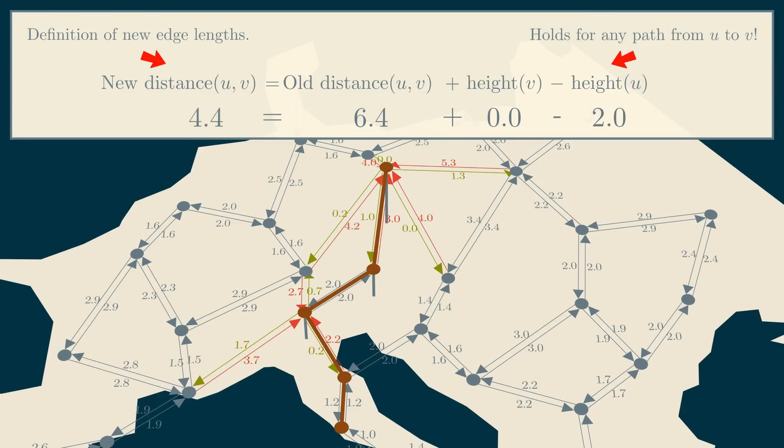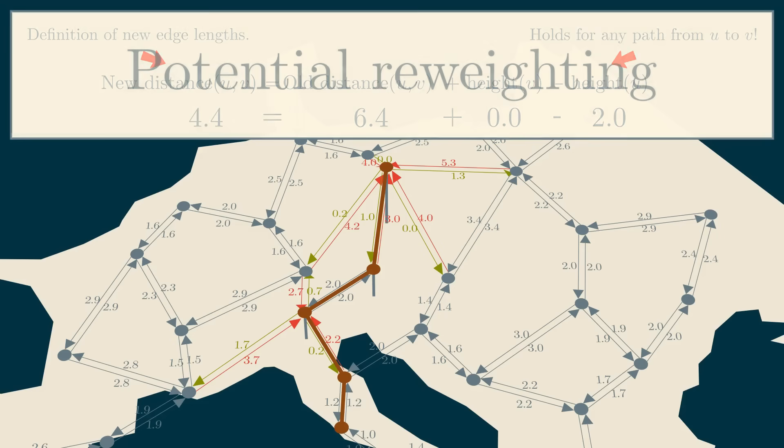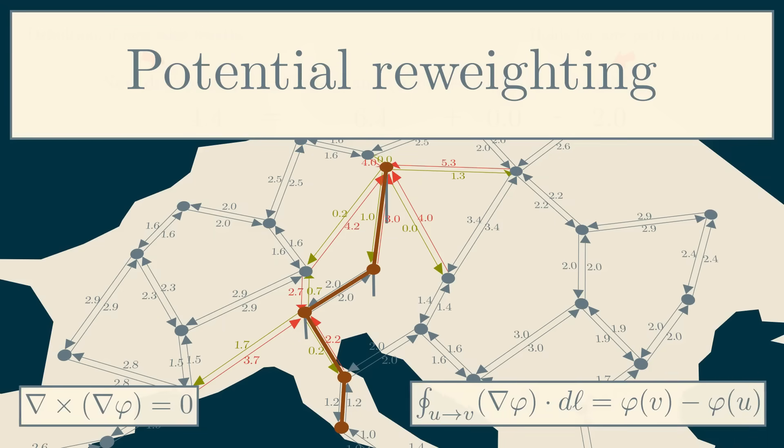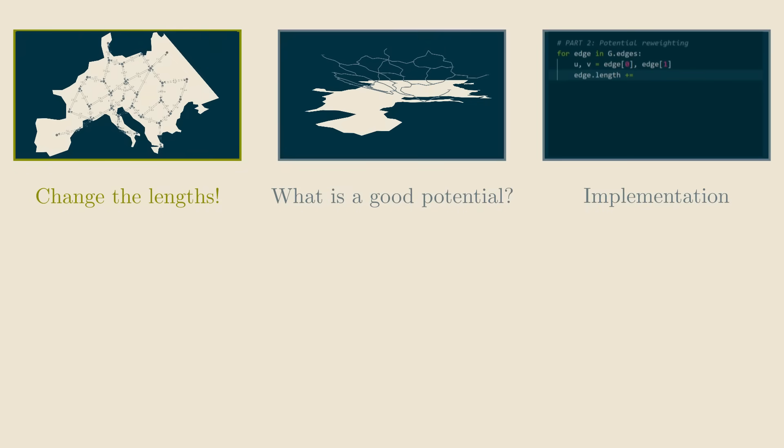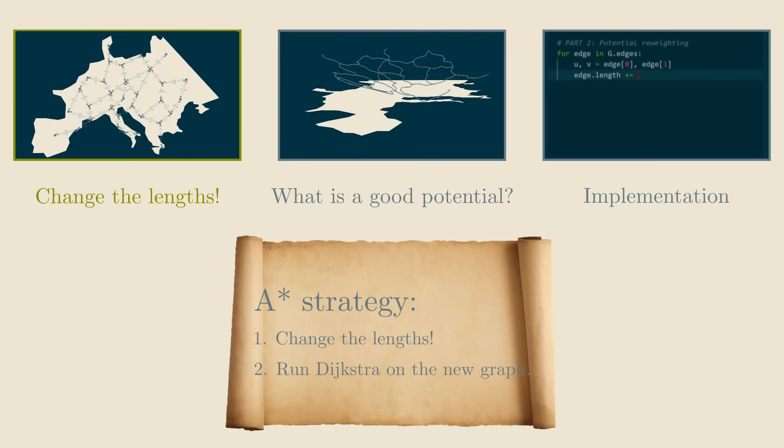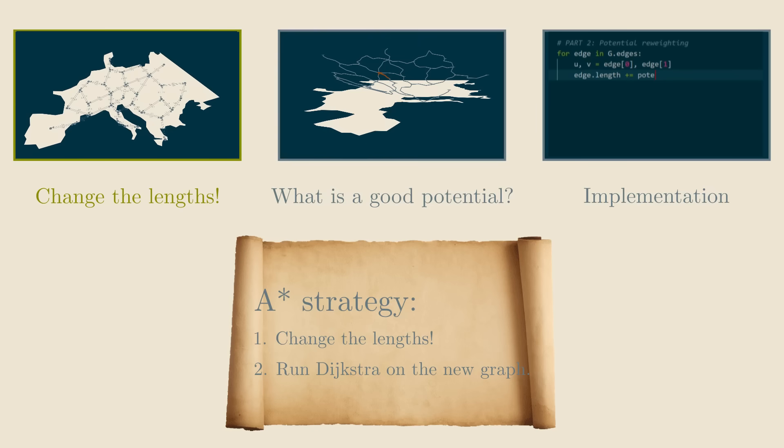These heights are usually called potentials, so I'll use that name from now on, and I will also use the name potential reweighting for the operation where the edges going up get longer and the edges going down get shorter. Why is it called potentials? Well, if you know some physics, you might have a bit of a deja vu right now, but let's not get distracted. Let's go back to our plan. Remember, we wanted to first change the input graph, and then run Dijkstra on it. We can now refine this strategy.